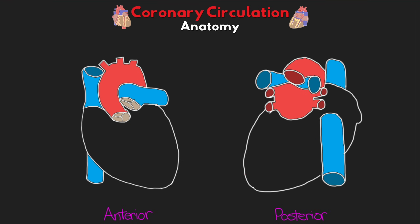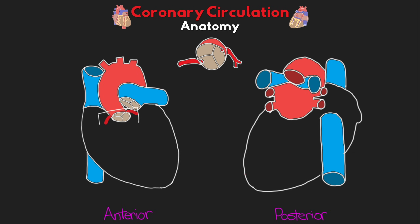There are two main coronary arteries that come off the trunk of our ascending aorta, something we refer to as the aortic root. If we take a cross section and look down on the aortic valve, we can see our semilunar aortic valve. Just above the aortic valve, in the sinuses of Valsalva, we have our two coronary arteries that come off the aorta and travel along the respective atrioventricular sulcuses, also referred to as the coronary sulcus. We have the right coronary ostium for the right coronary artery, and the left coronary ostium for the left coronary artery. The coronary arteries sit on the epicardial surface of the heart, directly under the pericardium.